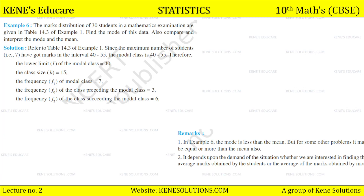Example 6: The marks distribution of 30 students in a Mathematics examination are given in the table. Find the mode of this data and also compare and interpret the mode and the mean. Refer to table 14.3, example 1. Since the maximum number of students — that is 7 — have got marks in the interval 40 to 55, the modal class is 40 to 55. So L = 40, class size h = 15, f1 = 7, f0 = 3, f2 = 6.